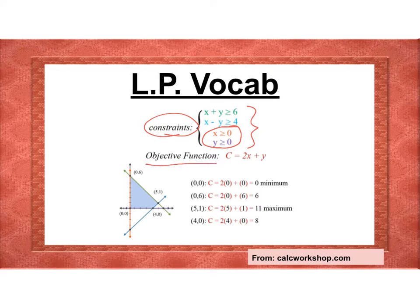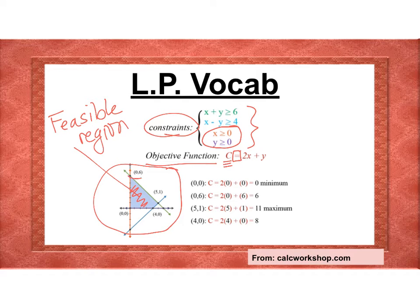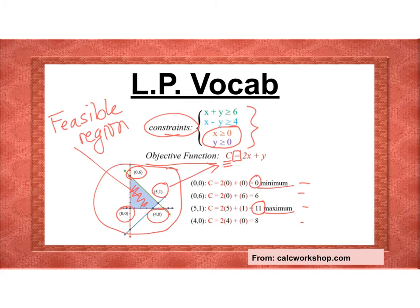Our objective function is going to be an equation — notice how it equals C. Sometimes we'll be trying to maximize or minimize cost, or maximize profit. On the graph, all of the inequalities are graphed and shaded. That shaded region is called the feasible region — that's where all possible answers could come from. The answers we concern ourselves with are the vertices, the points that touch the shaded region. We plug those vertices into the objective function and find the highest value for maximum or the lowest for minimum.